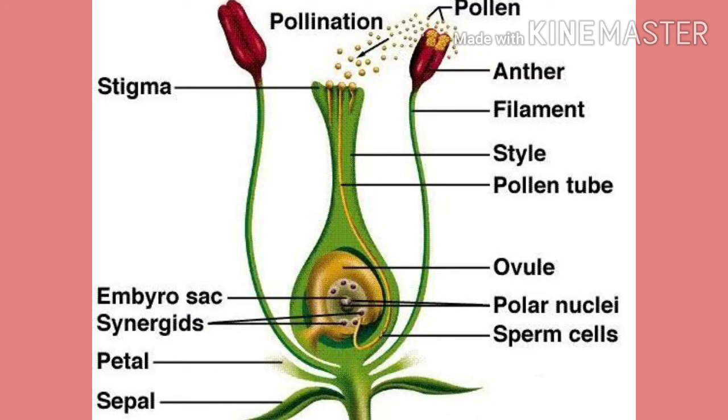In the ovary are ovules. In an ovule is an embryo sac, and in the embryo sac is an egg cell.